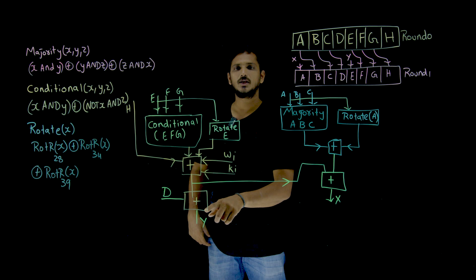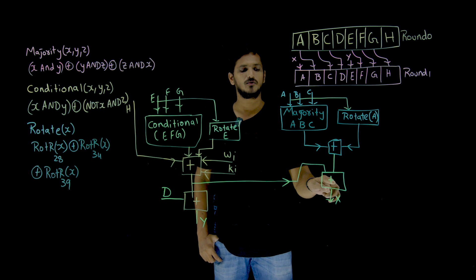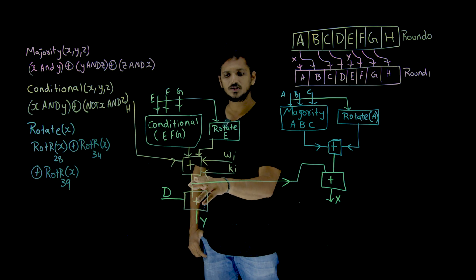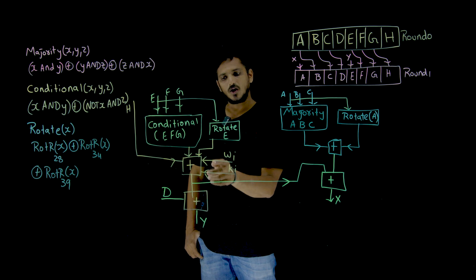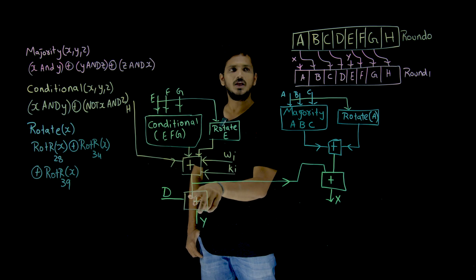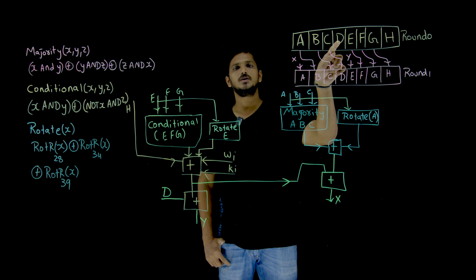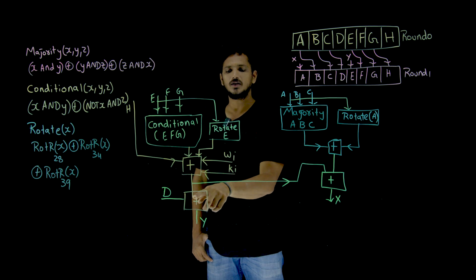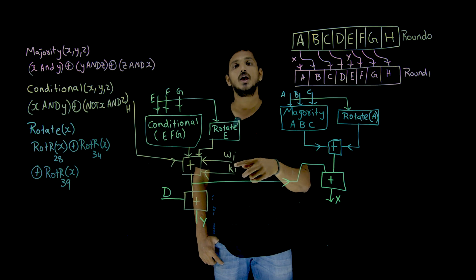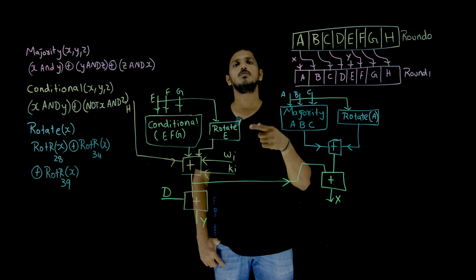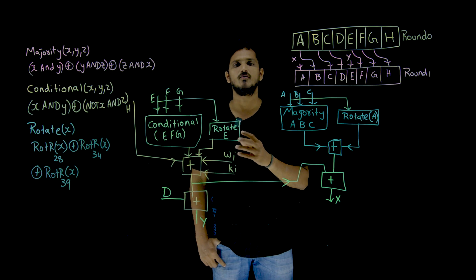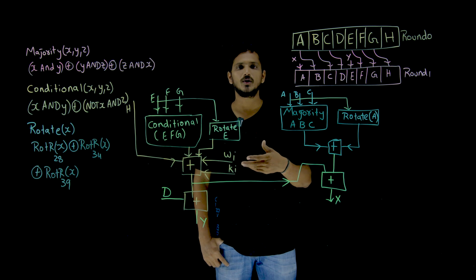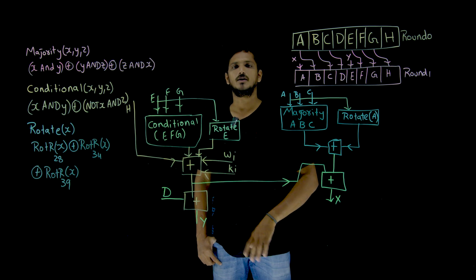And whatever the output you got here, this is sent to X. Not only this, this output is taken as input to the next one along with this input D, the D value from here. It is also taken as input and these two values are going to be again added, addition modulo 2 power 64, and the final output which we got here is Y value. This is how we are going to find X and Y values.